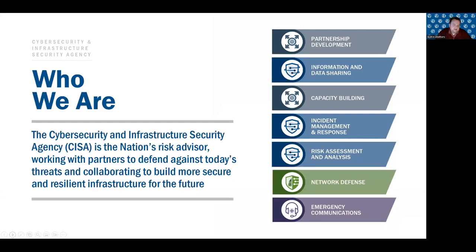CISA, the Cybersecurity and Infrastructure Security Agency, was created with the Cybersecurity and Infrastructure Security Act of 2018. It took primarily the National Preparedness and Programs Directorate from the Department of Homeland Security and rolled it into its own quasi-independent agency. What we are responsible for is exactly what the title says: primarily infrastructure security and cybersecurity, and included as part of infrastructure is public safety emergency communications, along with many other critical infrastructure sectors like electricity and water.